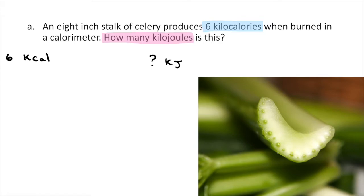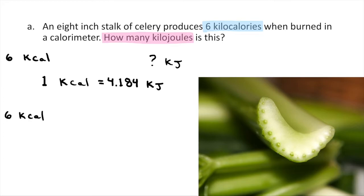The first thing you always need for a conversion is a conversion factor that relates the two units. How do kilocalories and kilojoules relate? In every one kilocalorie there are 4.184 kilojoules. Once you have your conversion factor, take the number they give you — six kilocalories — write a multiplication sign, a fraction bar, and the units you start with always go on the bottom of that fraction because you want them to cancel out.